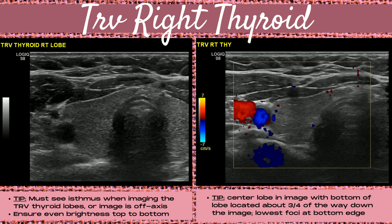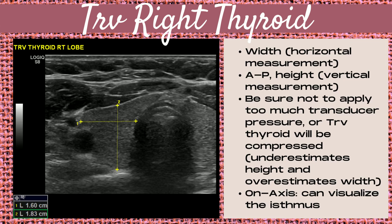Now moving on to the transverse right thyroid lobe. You must see the isthmus when imaging the transverse thyroid lobes or the image is off axis. Ensure that your thyroid lobe has even brightness from top to bottom. Center the lobe in the image with the bottom of the lobe located about three-quarters of the way down. Use multiple foci — typically two for a thyroid study — with the lowest foci placed at the bottom edge of the thyroid lobe. When measuring, perform a width measurement (horizontal) and an AP or height measurement (vertical). Do not apply too much transducer pressure, or the transverse thyroid will be compressed, underestimating the height and overestimating the width measurement.